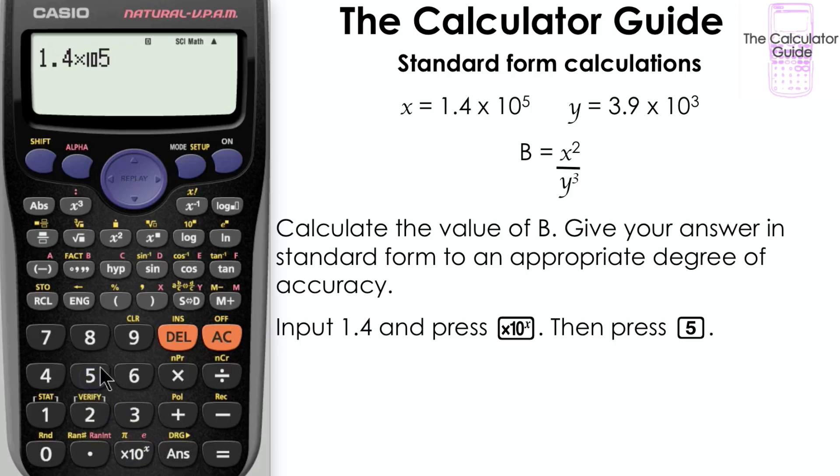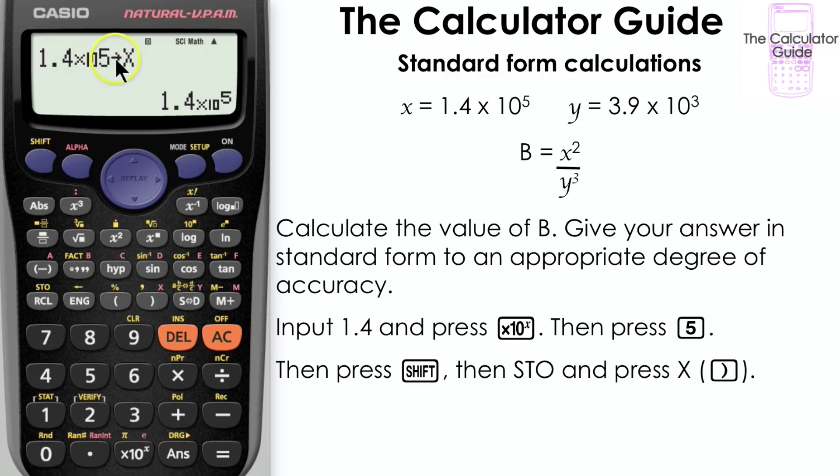Input x as we did in part a, and then press shift, then store, and then press x which is located above the right bracket button. There's no need to press alpha first.